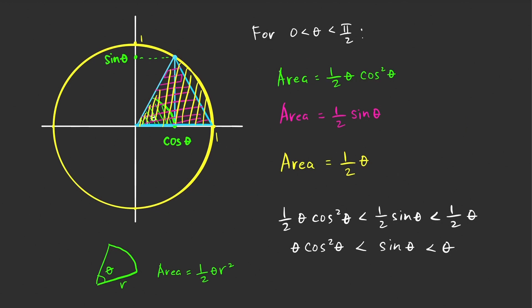Dividing all sides by positive theta, we get a bound for sine theta over theta: cosine squared theta is the lower bound and one is the upper bound. We didn't change the direction of the inequality because we divided by a positive number, theta.